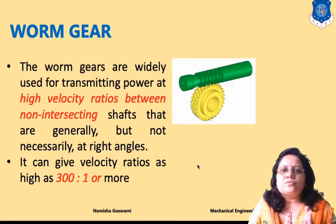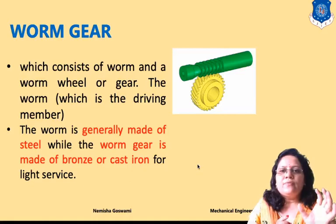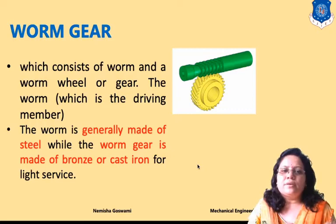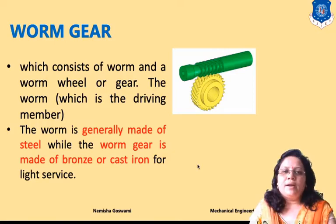A worm gear system consists of basically two elements: first is the worm, and second is known as the worm wheel or simply gear. The first element, which is the driving element, looks like a screw — this is known as the worm. The second is the driven member, which is your gear. Generally, worm is made of steel and worm gear is made of bronze or cast iron.